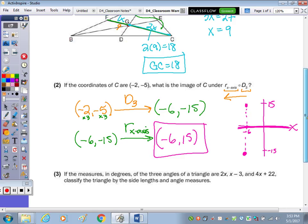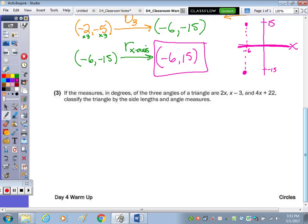And last, if the measures in degrees of the three angles of a triangle are given algebraically, we're going to classify the triangle by the side lengths and the angle measures. Well, the angles of a triangle, the sum equals 180.